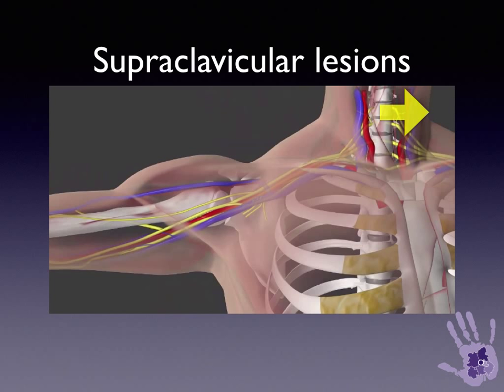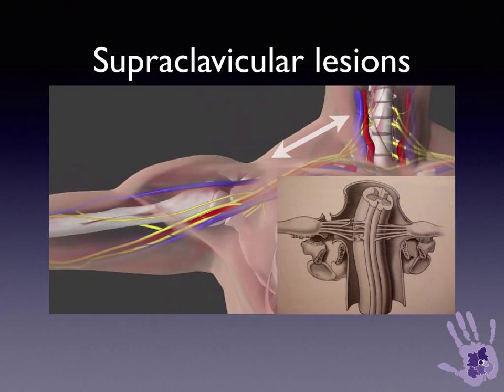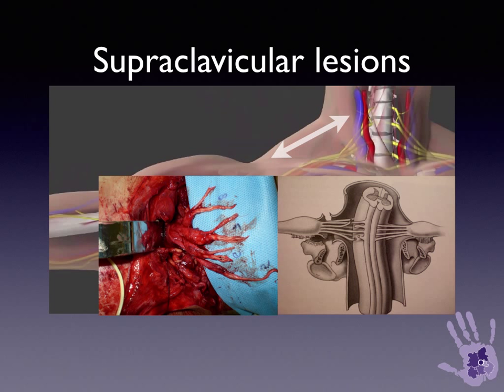The supraclavicular type of injury is usually caused by traction — the depression of the shoulder with the neck and head forced towards the contralateral side. This produces a traction force across the upper trunk predominantly, and may result in disruption of the rootlets where they attach to the spinal cord, resulting in the avulsion injury. In a severe avulsion injury, you can see all the ventral and dorsal roots and the dorsal root ganglia avulsed from all five of the main contributory roots to the brachial plexus.